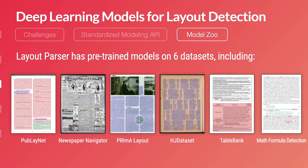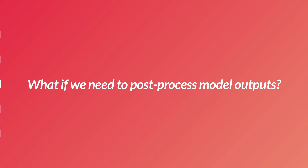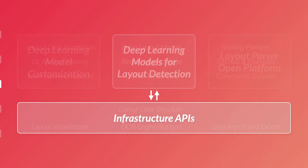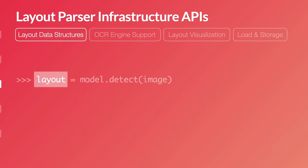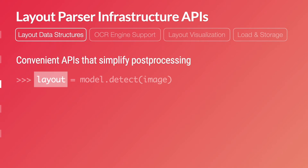To make this API possible, we also pre-trained a series of models on different datasets of various layouts, which we refer to as the model zoo. Now we can detect document layouts using these deep learning models. But in DIA pipelines, post-processing is usually required for getting the target output. To this end, we built various functions to support this goal, which we call infrastructure APIs. At the core of the infrastructure APIs are layout data structures, which come with convenient functions that can significantly simplify the post-processing steps.